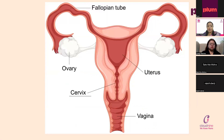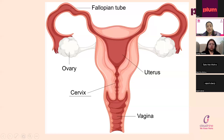Before we know the abnormal, we need to know what is normal. Here is a diagrammatic representation of the reproductive system of a woman. The mouth of the uterus, which is about three to four centimeters in a lady, is called the cervix. The proportion is going to be two to one — if the uterus is two, then the cervical length is going to be one.